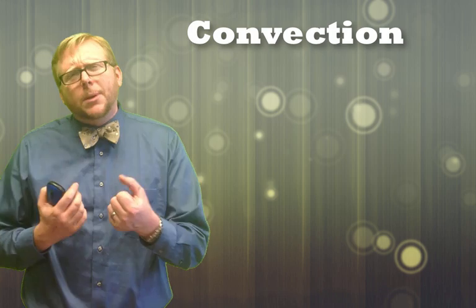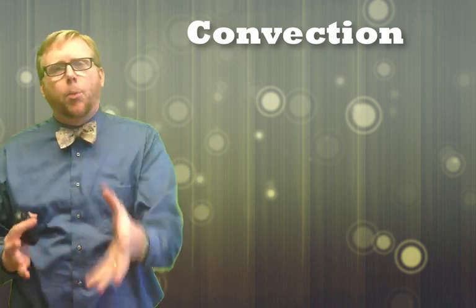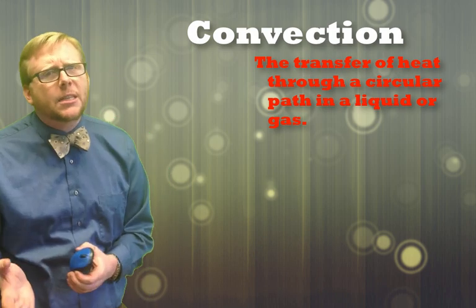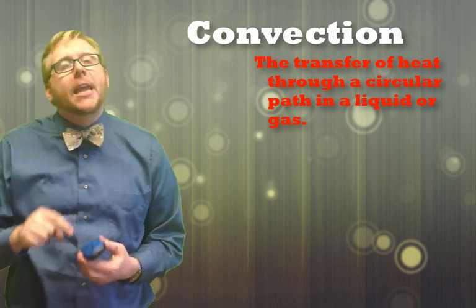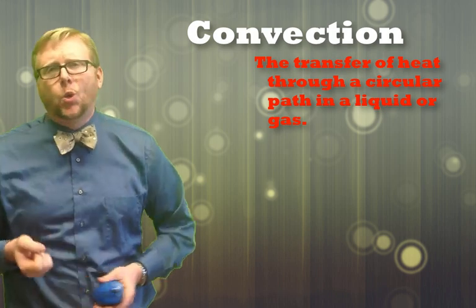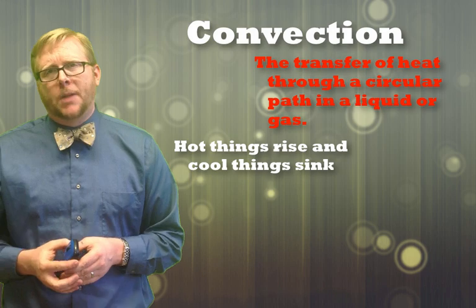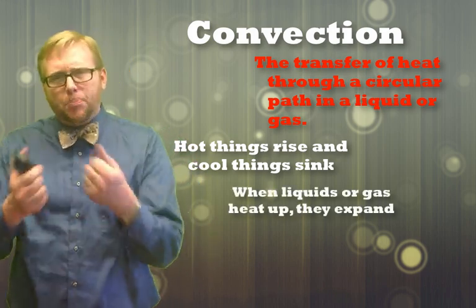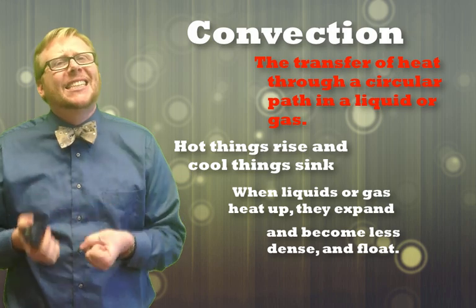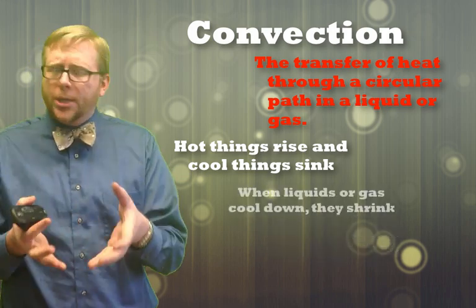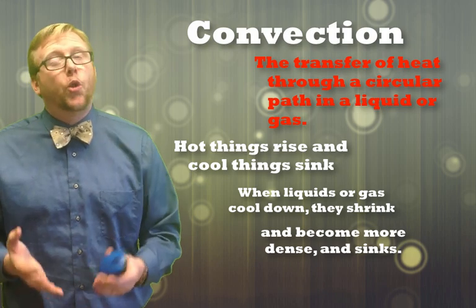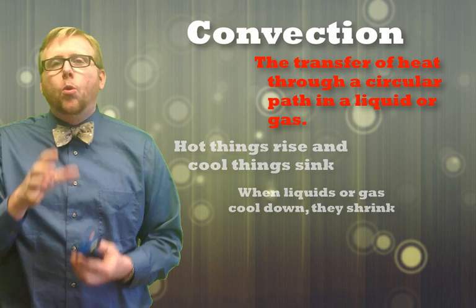The second way is a little more complicated — it's something called convection, and it's a really important process for the earth. Convection is defined as the transfer of heat through a circular path in a liquid or gas. You don't get this in a solid; it has to be liquid or gas. Hot things rise and cool things sink — that's true but a bit simplified. Really, when something is warmer it expands, and when it expands it becomes less dense, so it floats. When it cools, it shrinks, becomes more dense, and sinks. Hot things become less dense and cool things become more dense.